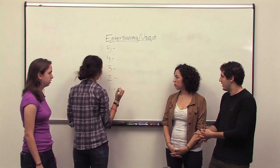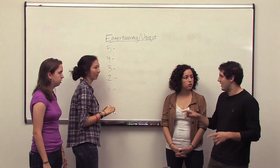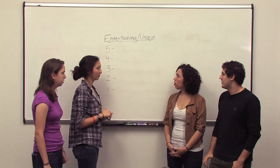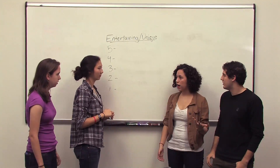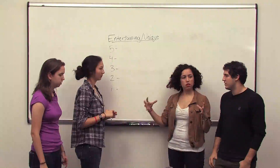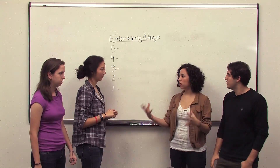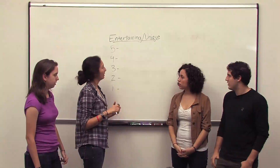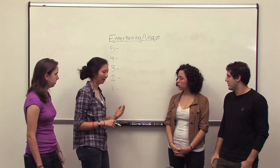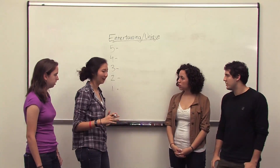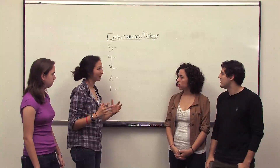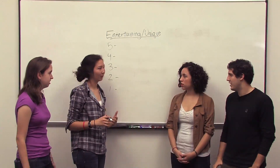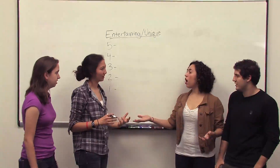We should start by picking the outliers — the extremes, like 5 and 1. Let's start with 5. What do we want the best emotion or best reaction to our device to be? We need to better state how you would feel if you're really entertained and think it's really unique — like 'this is the coolest thing I've ever seen.' What is that emotion, what does it make you want to do?